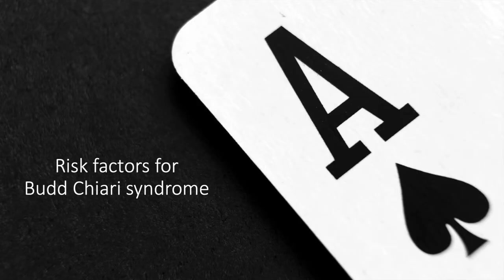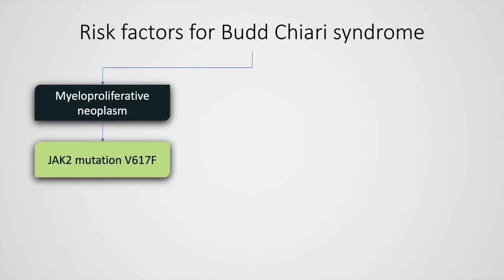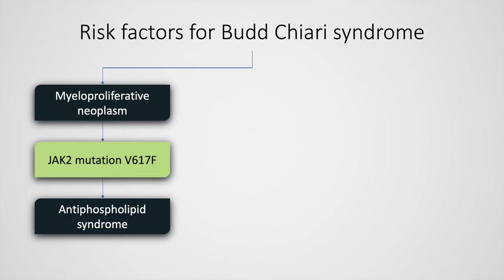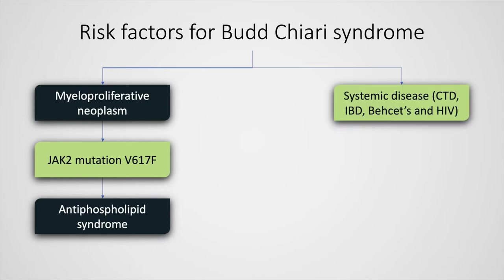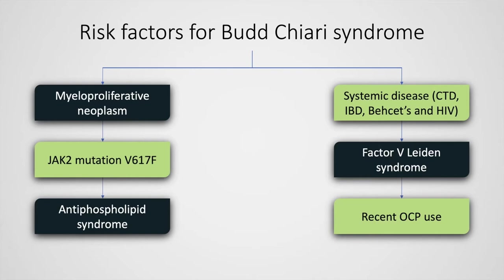The risk factors for Budd-Chiari syndrome include myeloproliferative neoplasms, JAK2 mutation, antiphospholipid syndrome, systemic diseases such as connective tissue disease, Behçet's disease and human immunodeficiency virus, the factor V Leiden mutation, and recent oral contraceptive pill use.